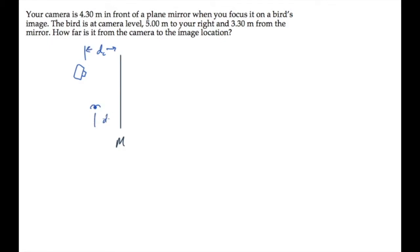And there's a bird located 3.30 meters from the mirror. We'll call that d sub b, b for bird. And the bird is 5 meters to the right of the camera. We'll call that distance h.